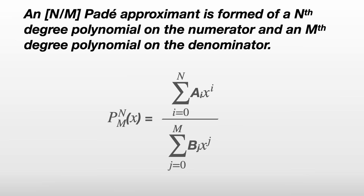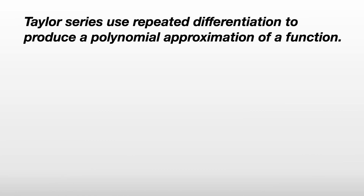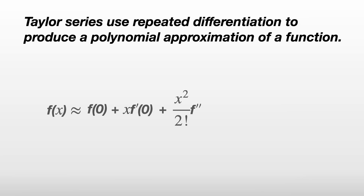Why might we want to approximate a function with a Padé approximant when we can use Taylor series? To recap, Taylor series use repeated differentiation to produce a polynomial approximation of a function about a particular point in x. So about x equals 0, f of x is approximately f of 0 plus x times f prime of 0 plus x squared over 2 factorial times f double prime of 0, and so on, up to a term in x to the power n.